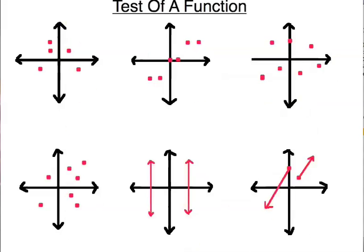I've got one more set of examples. A function can be a series of points, as we saw in our first illustration. Let's check these with the vertical line test. Notice that right here I can make this fail the vertical line test. So I have to say no, this one is not a function.